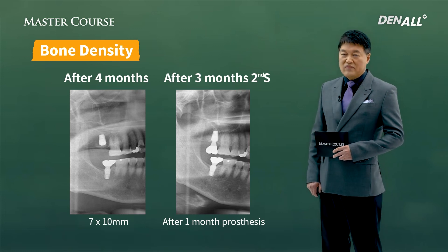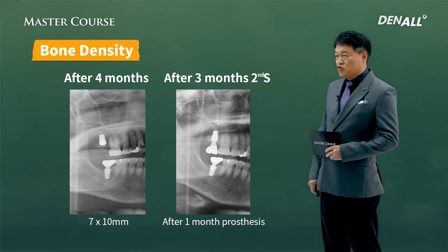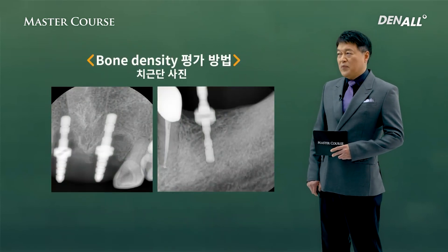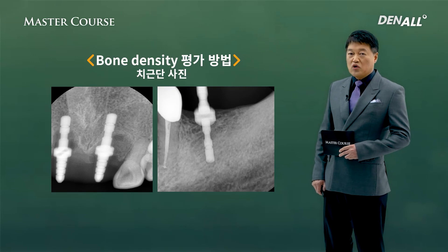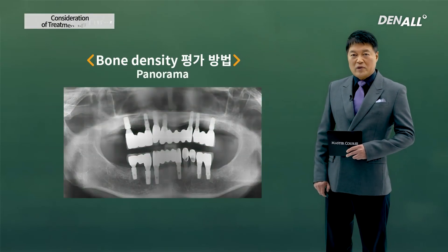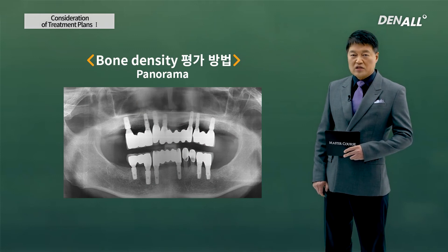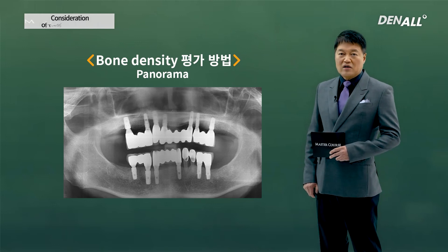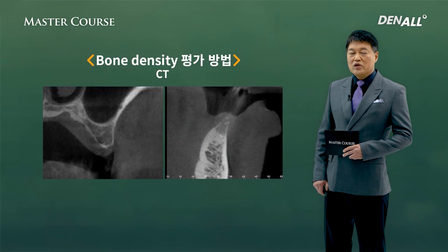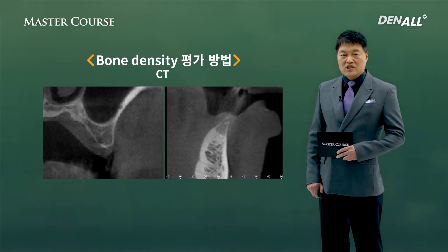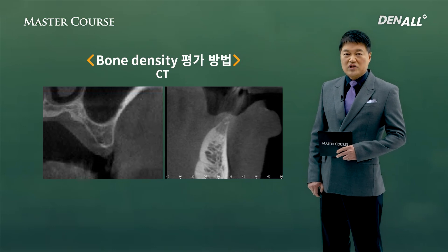In soft bone, it is difficult to gain initial stability, so you need to do under-drilling by one or two sizes to gain the best initial stability. To assess bone density, you can use an apical image, panoramic image, or compare with adjacent bone on the panoramic image. The most accurate is CT — you can accurately see the amount of cortical bone and cancellous bone, and using trabecular pattern you can assess whether it is hard, normal, or soft bone.